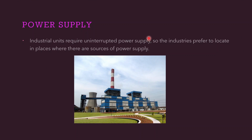Industrial units require economical, uninterrupted power supply. Therefore, most industries prefer to be located in areas where sources of power supply are abundant. Wherever power supply is available, many industries tend to set up there.